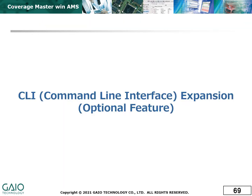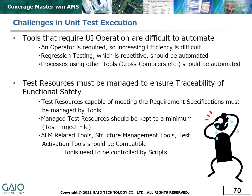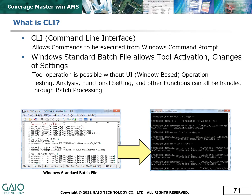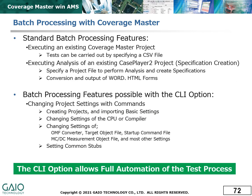Next, we will look at the expanded command line interface features offered as an additional option. Among the challenges facing unit testing are automation, which is particularly desirable for regression testing, and traceability, which is needed to satisfy functional safety requirements. The command line interface allows features of the tool to be accessed from the command prompt, which means that those commands can be included in batch files and scripts for automated execution. Without the CLI option, only basic operation of the test tool is possible with command line input. The CLI option allows greater access to project creation and adjustment of a wide range of settings, as well as stub management.